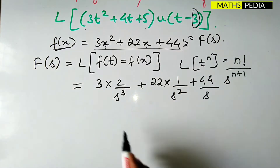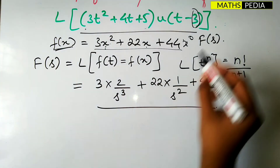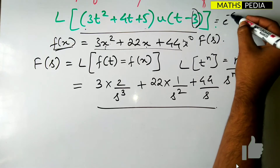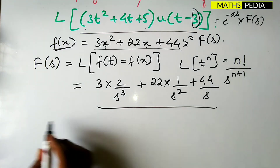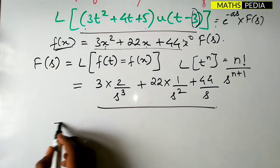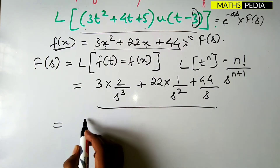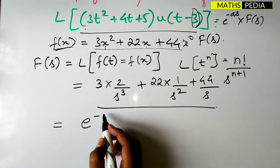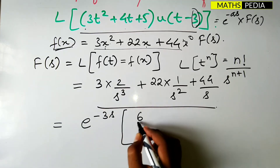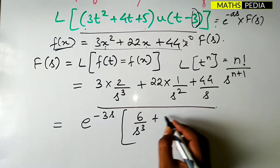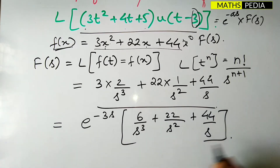Now, the final answer for this type of problem must be in the form e^(-as)·F(s). With a = 3, the final answer is: e^(-3s) · (6/s³ + 22/s² + 44/s).